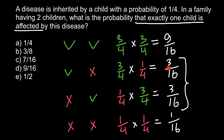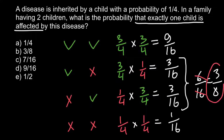So 3 over 16 plus 3 over 16 gives us 6 over 16. We can reduce both numbers by dividing by 2, giving us 3 over 8. And this is our answer today.